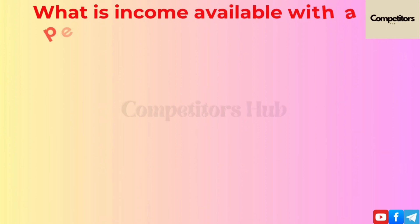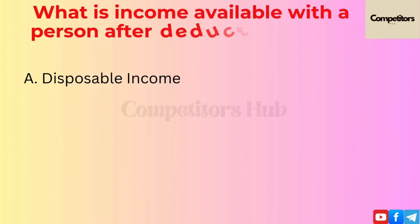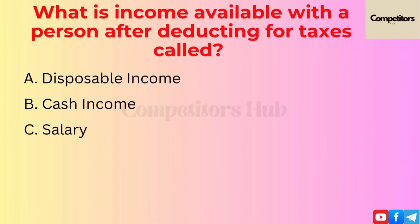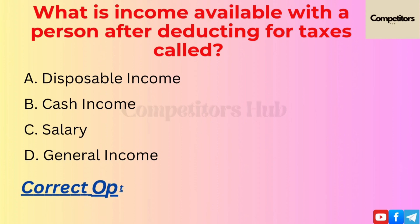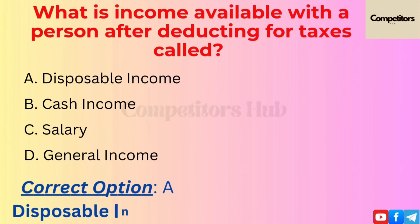The next question is: what is the income available to a person after deducting taxes called? Option A: Disposable Income. Option B: Cash Income. Option C: Salary. Option D: General Income. The correct option is A, Disposable Income.